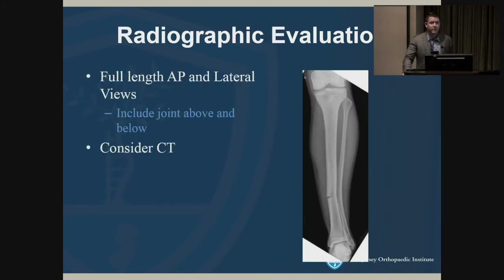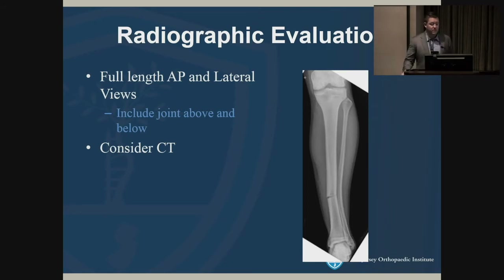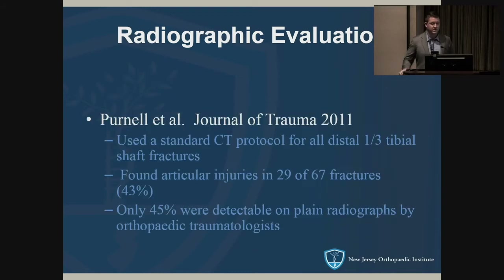On evaluation, you want full AP and lateral views, and you want to include the joint above and below. Any time you think there could be articular involvement, you want to consider a CT scan.